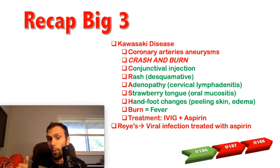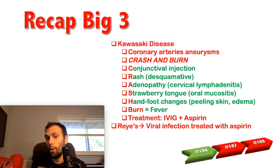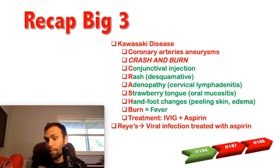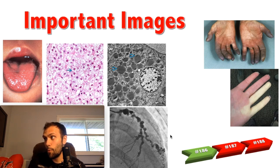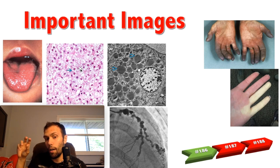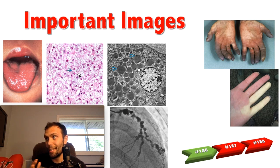Recap: For Kawasaki disease, remember coronary artery aneurysms as the most serious effect — risk proportional to duration of fever. The CRASH and BURN mnemonic covers the classic presentation. Treat with IVIG and aspirin, not acetaminophen or ibuprofen. Keep vaccinations up to date because aspirin after a viral infection can lead to Reye syndrome with microvesicular steatosis. For polyarteritis nodosa, remember the rosary sign and the key images — microvesicular steatosis histology showing clear fat vacuoles with no lymphocytes, lipid droplets on electron microscopy, strawberry tongue for Kawasaki's, and gangrenous digits for thromboangitis obliterans.